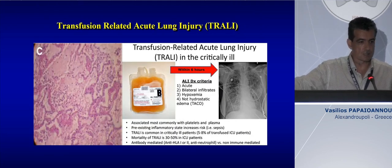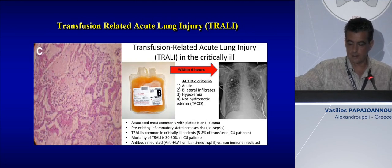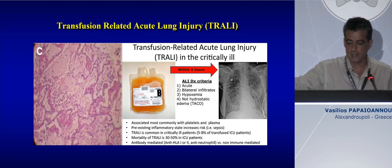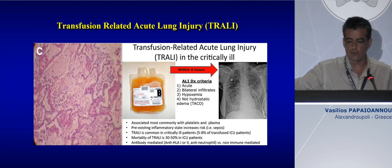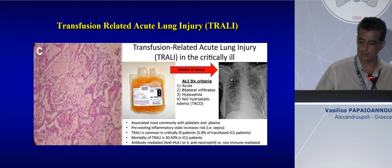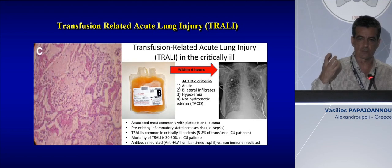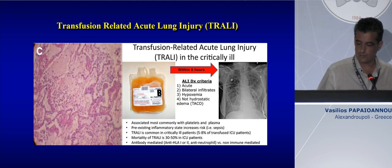TRALI — transfusion-related acute lung injury — is not that rare. It can develop in about 10% of transfused ICU patients. It is most related to transfusion of FFP and platelets, not massive transfusion. It can induce a state of hypoxemia with increased work of breathing, similar to ARDS, but is not attributed to volume overload. For volume overload, there is a different syndrome called TACO — transfusion-associated circulatory overload — which is an inflammatory reaction mostly attributed to trapping of donor erythrocytes in the pulmonary circulation of the recipient.